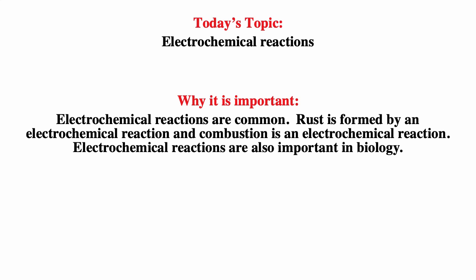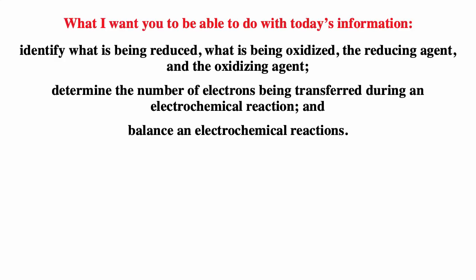An electrochemical reaction just means that there's a transfer of electrons from one species to another species. After watching this video you should be able to identify what's being reduced, what's being oxidized, the reducing agent and the oxidizing agent, determine the number of electrons being transferred during an electrochemical reaction, and balance an electrochemical reaction.